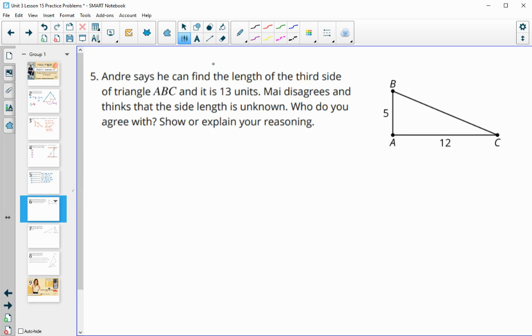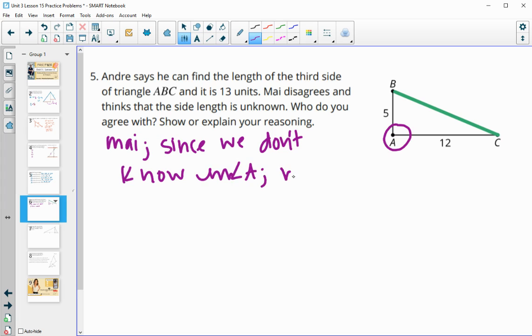Number five, Andre says he can find the length of this third side BC. And he believes it's 13. And Mai says that you can't find it. So she disagrees and thinks that the side length is unknown. Who do you agree with? Show or explain your reasoning. So I agree with Mai. And that's because we don't know if this is a right angle. So since we don't know if it's a right triangle, we can't use Pythagorean theorem, which is what Andre did. So since we don't know the measure of angle A, we can't use Pythagorean theorem.